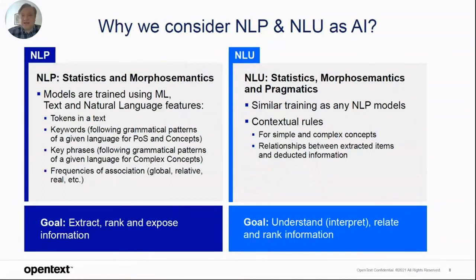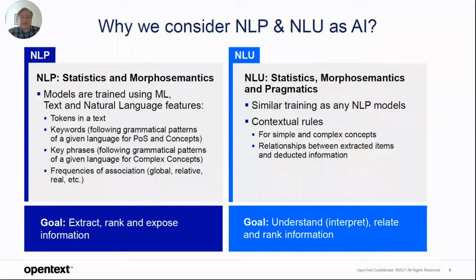Why should we consider NLP and NLU as artificial intelligence? All of those are using models trained using machine learning, text and natural language features — tokens, keywords, key phrases — and statistics to associate all of those using frequencies. When we talk about NLU, it's more statistics, morphosemantics, and pragmatics. The fact that pragmatics is involved in NLU makes a difference — we're really talking about contextual rules, relationships between different pieces of text, different elements such as keywords, classifications, and entities, plus interpretation. However, the training of those models is very similar to NLP models.